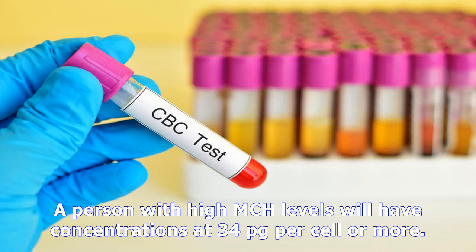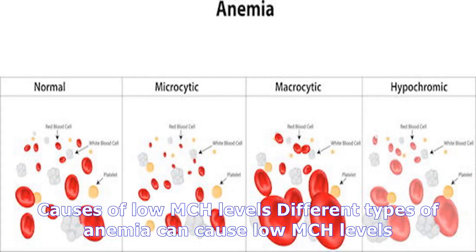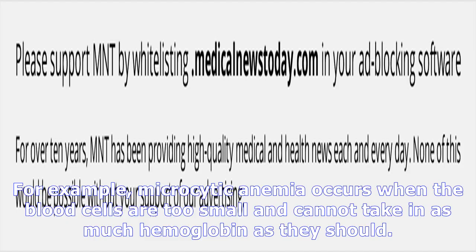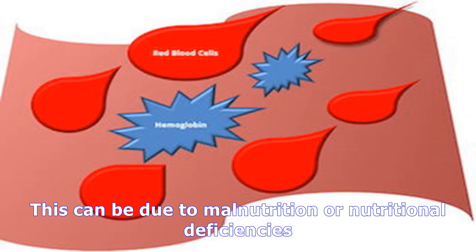Different types of anemia can cause low MCH levels. For example, microcytic anemia occurs when the blood cells are too small and cannot take in as much hemoglobin as they should. This can be due to malnutrition and nutritional deficiencies, though some medical conditions can also cause anemia even if the person eats a balanced and healthful diet.